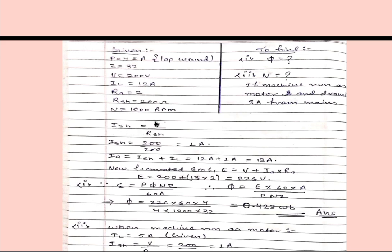ISH we can get from this formula V divided by RSH. V we have 200 volt and RSH is 200, so field current is 1 ampere. Now we can get armature current which will be sum of field current plus load current, so 12 ampere plus 1 ampere will be 13 ampere.